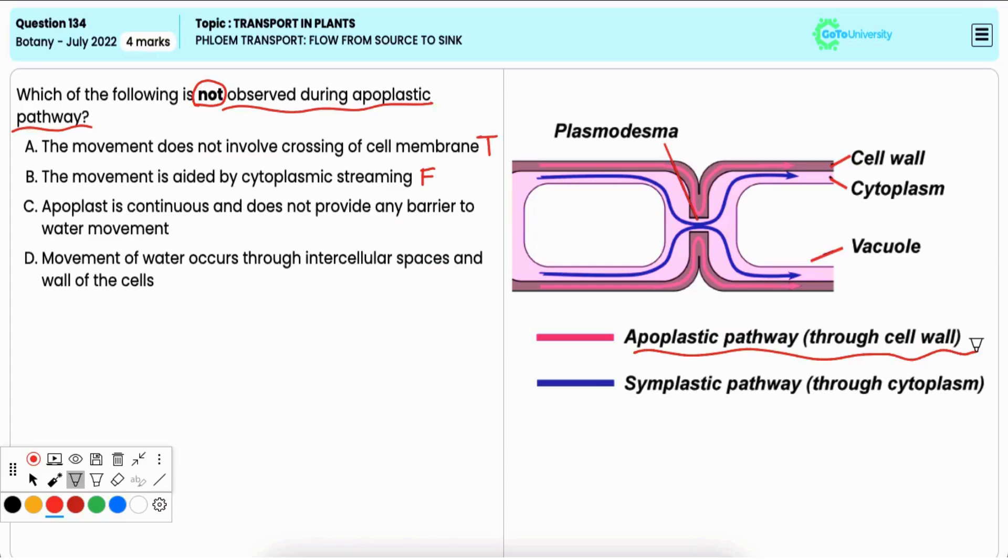Without entering the cytoplasm, cytoplasmic streaming occurs in the symplastic pathway, where water moves through the cytoplasm and plasmodesmata, not in the apoplastic pathway. Hence, option B is the correct answer.